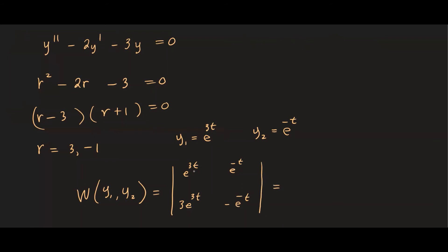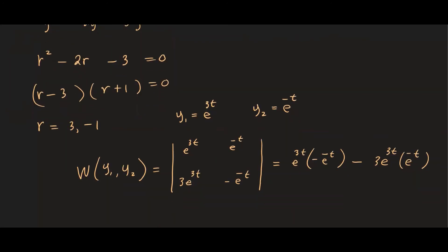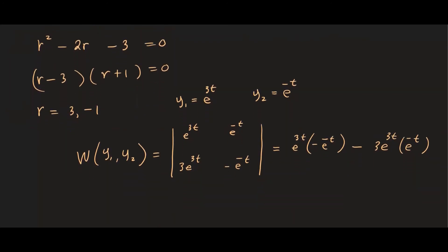So we have e^(3t) times -e^(-t), and then minus 3e^(3t) times e^(-t). So pretty much that's how you multiply these entries of this determinant. So now if I just go ahead and simplify this.